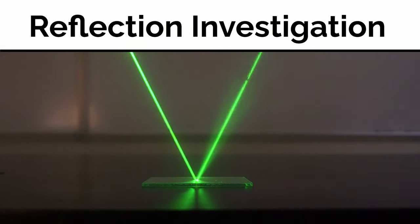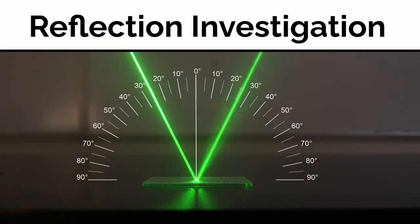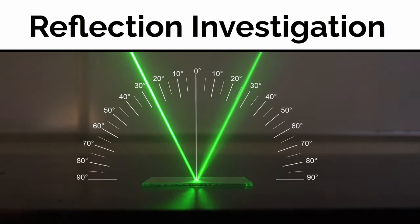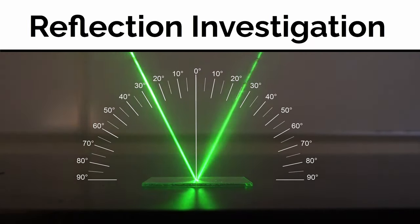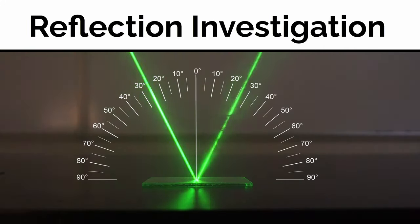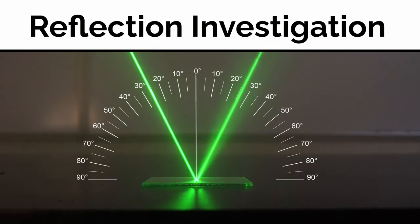Here we have a laser beam coming in and bouncing off a flat mirror. I'm going to put a line perpendicular to the surface of the mirror where the light hits — we always measure angles relative to a perpendicular or normal line to the surface. On the left side, the light is coming in at about 26 degrees relative to that perpendicular line, and when it bounces off, it's also bouncing off at about 26 degrees. The reflected angle is the same as the incoming, or incident, angle.